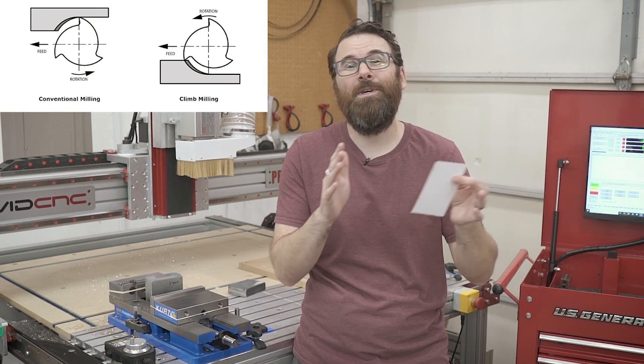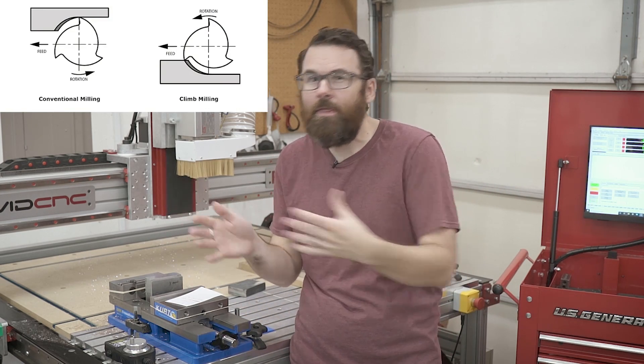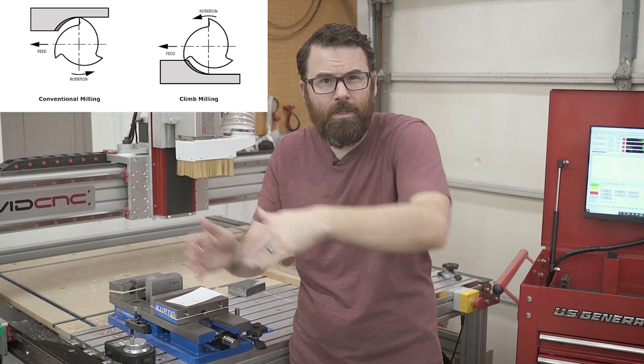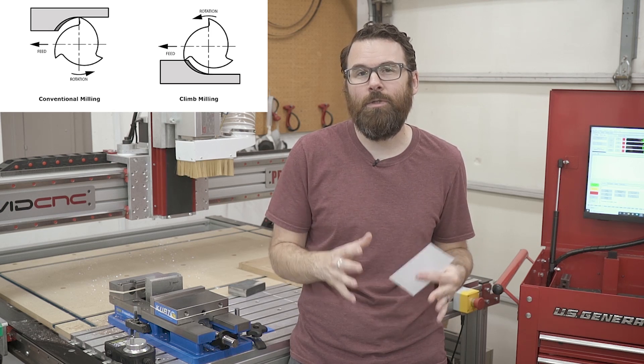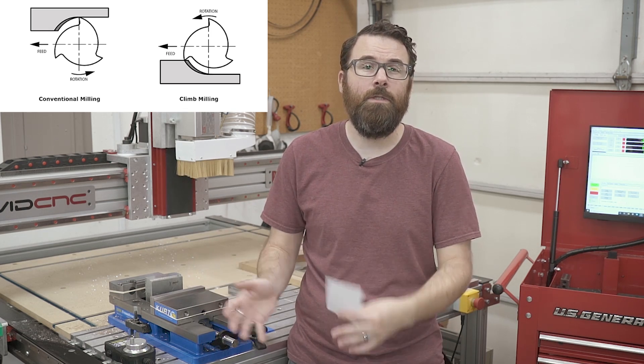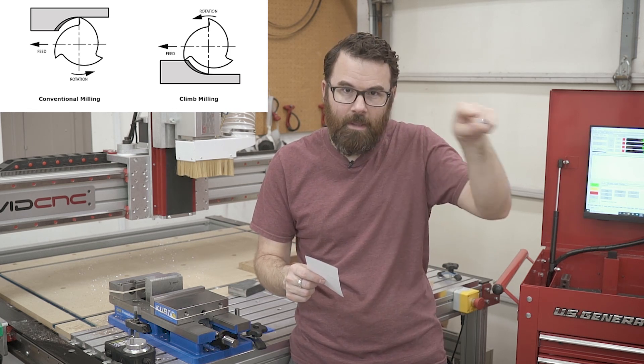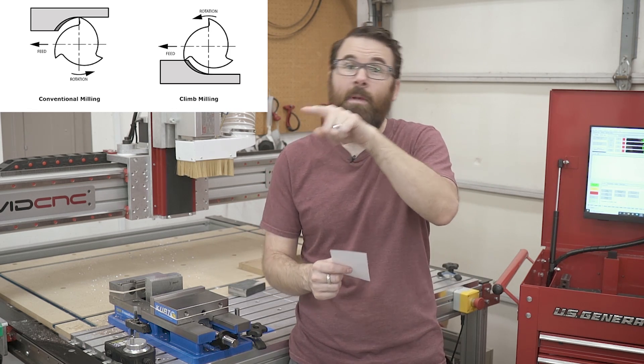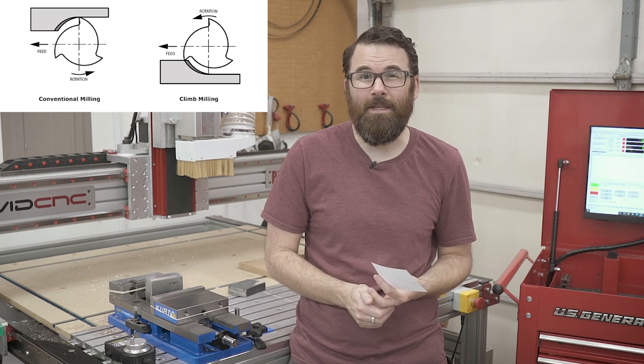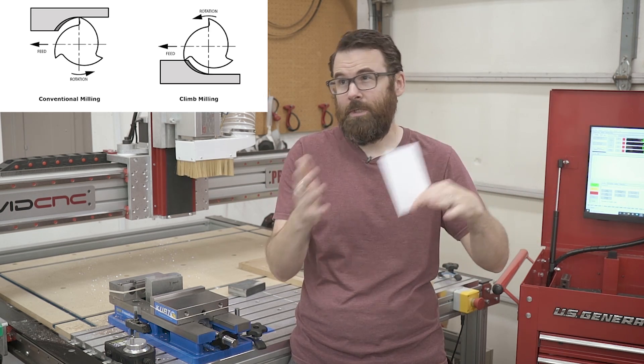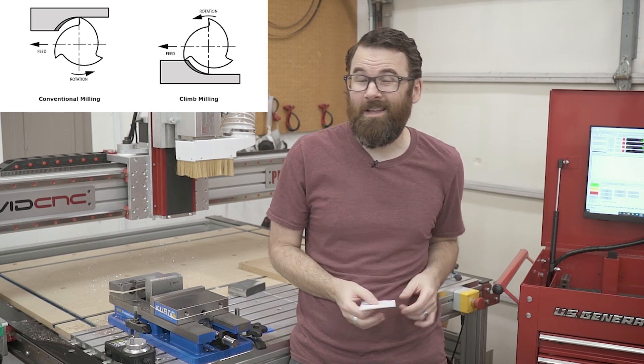Secondly, climb cutting versus conventional cuts. A climb cut basically feeds with your feed rate, so it's cutting into it, and conventional is feeding against it. Generally speaking, if you have a less rigid machine, a conventional cut is going to be a worse cut. In my previous video, I was going back and forth like this and that means that you have climb and conventional, climb and conventional. So you're kind of mixing the two cuts. You can very easily set this in Fusion or SolidWorks or whatever your CAM package is to do climb only. So I will be doing climb only cuts.